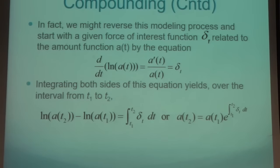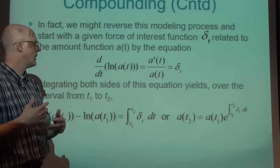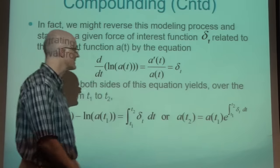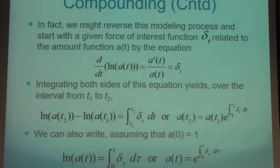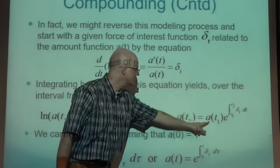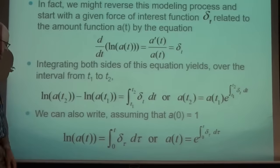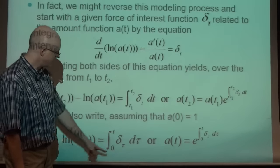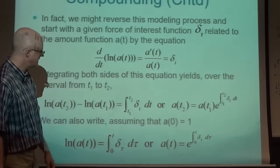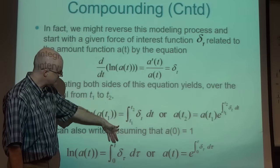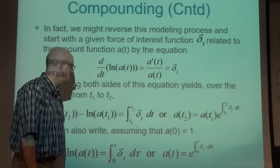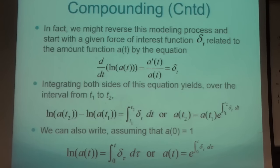So there's a general equation giving the amount function at time t2 based on knowing it at time t1 plus knowing the force of interest. Most commonly used with t1=0: if a(0)=1, then ln(a(0))=0, and solving for a(t) gives a(t) = exp(∫[0 to t] delta_τ dτ). I use tau as the integration variable to emphasize that t is the upper limit - the true variable of the function.